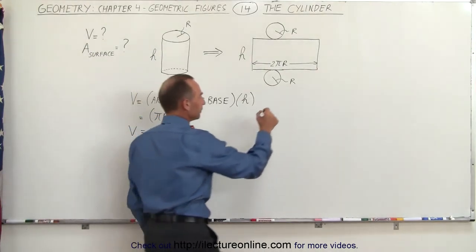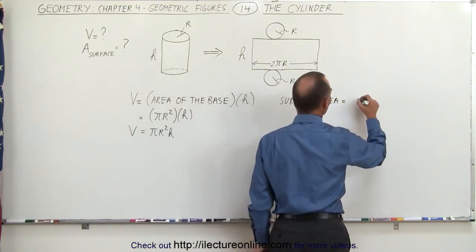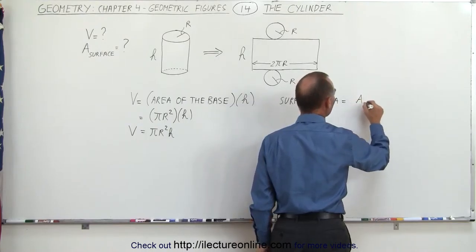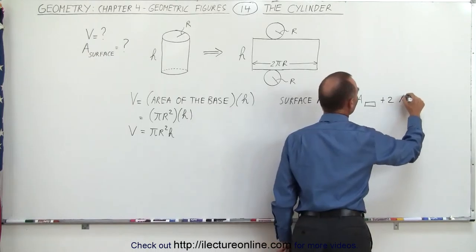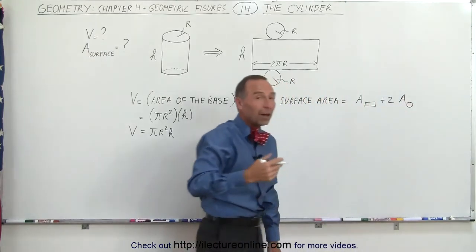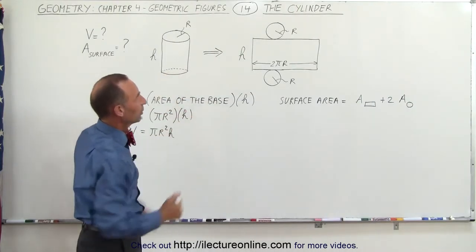Now to find the surface area, that would be equal to the sum of the area of the rectangle plus two times the area of the circle. Either the top or the bottom. Multiply that by two because essentially we have two of them.